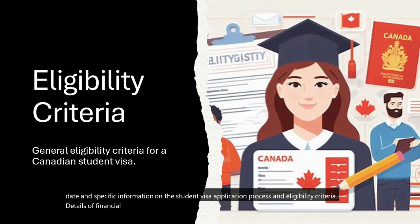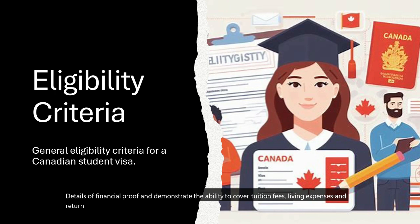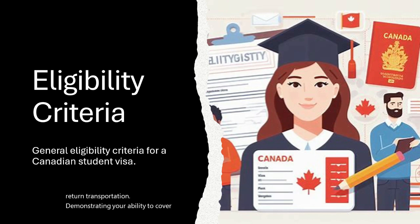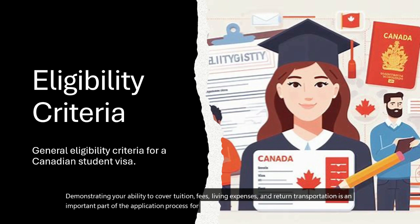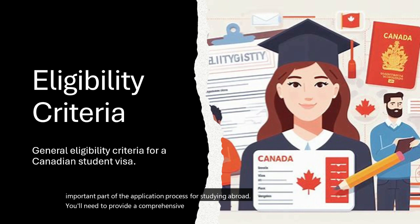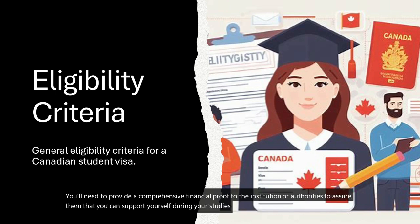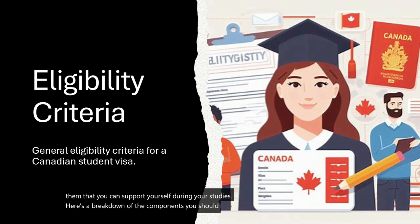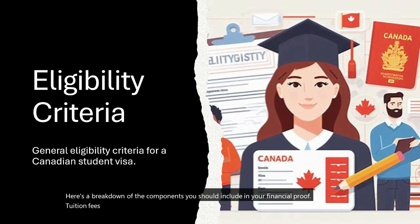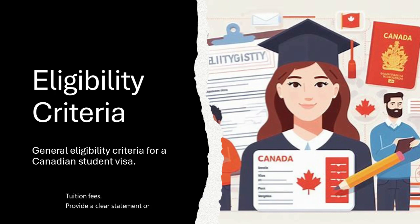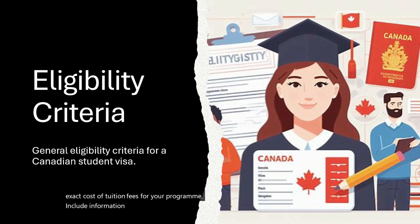Details of financial proof: demonstrating the ability to cover tuition fees, living expenses, and return transportation is an important part of the application process. You'll need to provide comprehensive financial proof to the institution or authorities. Here's a breakdown: First, Tuition Fees — provide a clear statement or acceptance letter from the educational institution detailing the exact cost of tuition fees for your program, and include information on any scholarships, grants, or financial aid you've been awarded.